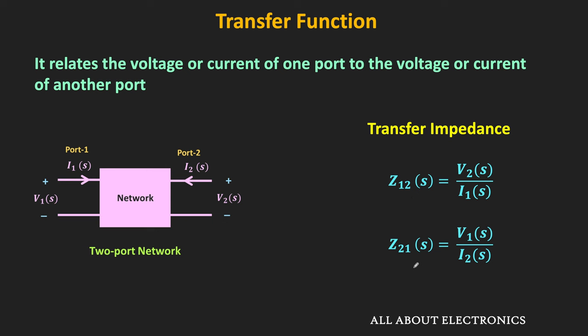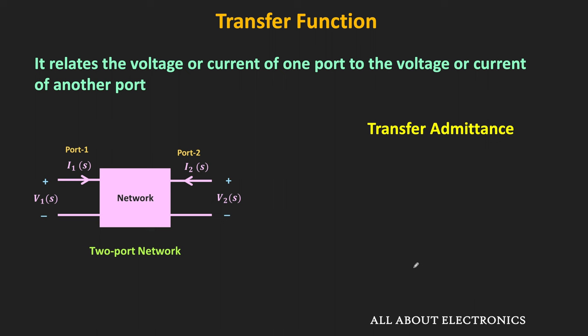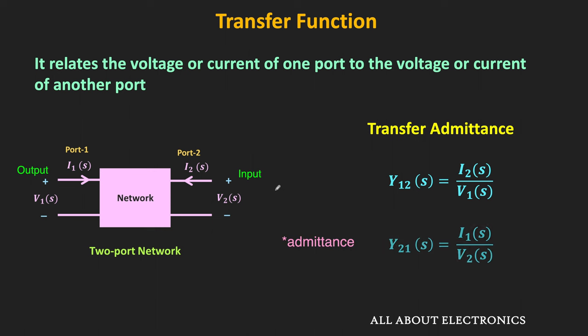Similarly, if we take the ratio of the output current to the input voltage, it is known as the transfer admittance. For a two-port network, if input is at port 1 and output at port 2, then the transfer admittance Y12 equals I2 divided by V1, where I2 is the output current and V1 is the input voltage. Conversely, if input is at port 2 and output at port 1, then Y21 equals I1 divided by V2. In general, the transfer admittance is the ratio of the output current to the input voltage.